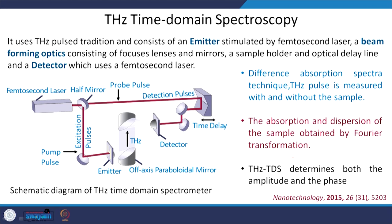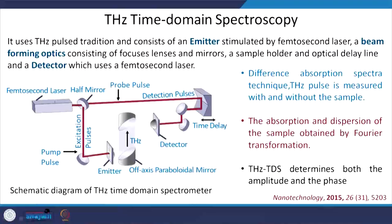Let us discuss terahertz time domain spectroscopy (TDS). This spectroscopy measures the absorption spectra with and without the sample from a terahertz pulse. You measure the absorption and dispersion of the sample by using Fourier transform, giving you both amplitude and phase. You have a femtosecond laser which excites pulses, and an emitter which generates the terahertz source. It passes through the sample and a probe pulse from the femtosecond laser tracks how much change in phase occurred — that is how TDS works.